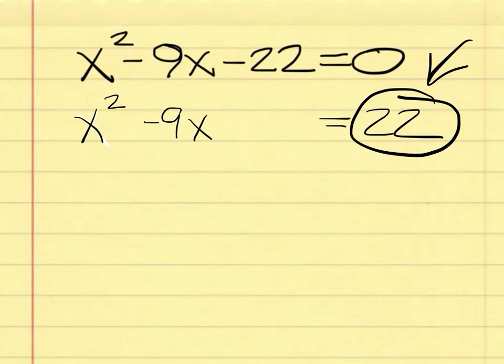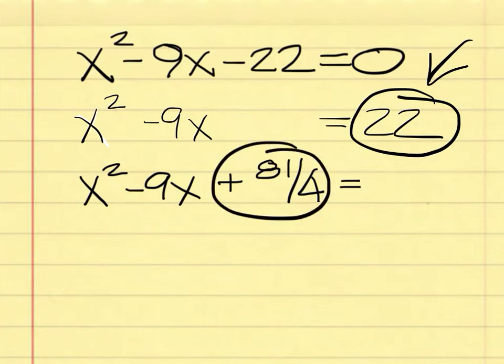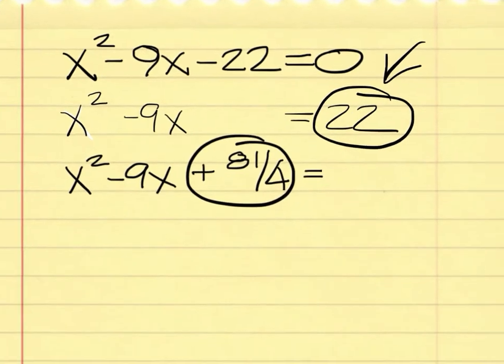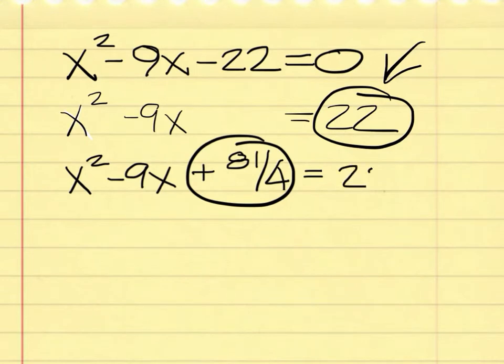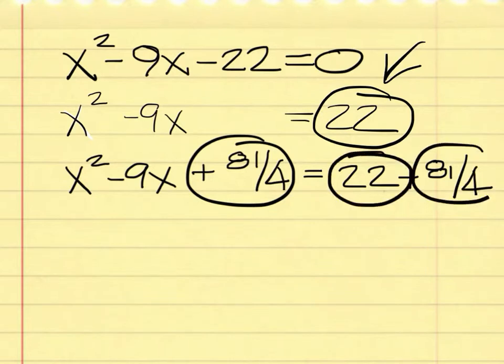Next up is to find half of the negative 9 and square it. So that would be 9 over 2. And if you square that, you would get 81 over 4. So there's another blank there that you could put in. And then on the right side, 22 plus 81 over 4. You could have two blanks to fill in there.